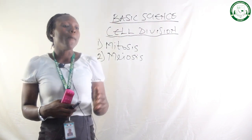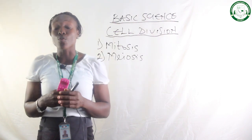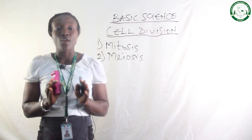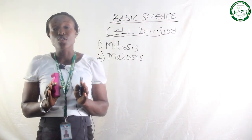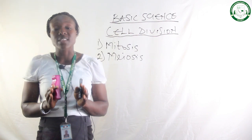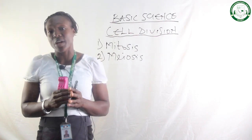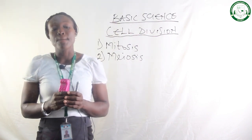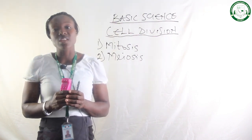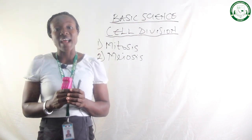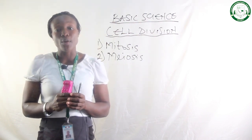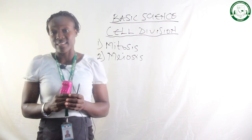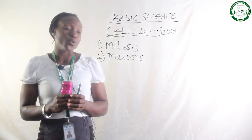Mitosis is the basis of growth and development, and it also occurs in asexual reproduction. So for growth to occur, mitosis must take place, and even in development, and it also occurs in asexual reproduction.